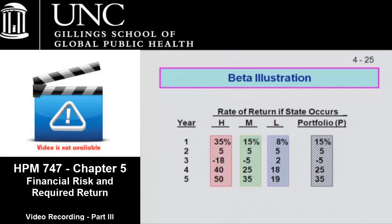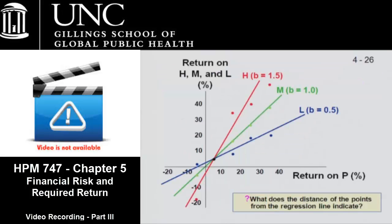And if we do that, we'll find that H has a beta of 1.5, M has a beta of 1, and L has a beta of 0.5.